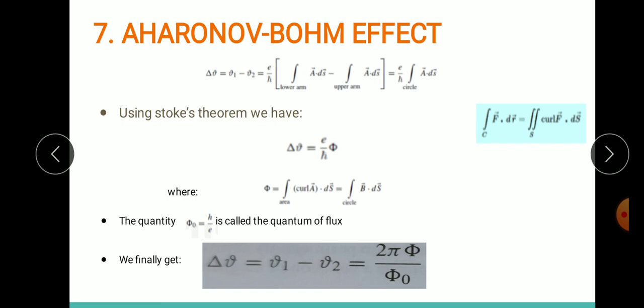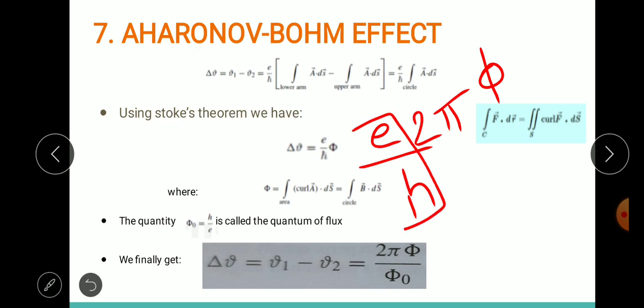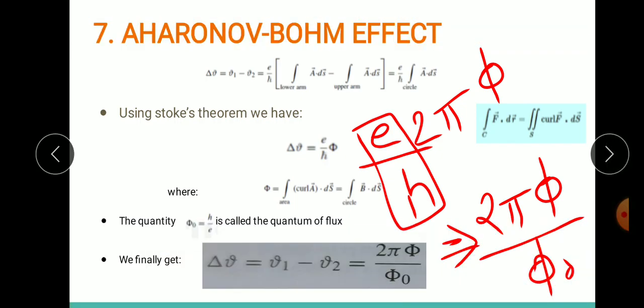Why is that so? Φ₀ is h/e, and here we have ℏ which is h/2π. We have e/ℏ = (e·2π)/h = (2π)/Φ₀. So we get 2πΦ divided by Φ₀. This is the equation for the change in phase.